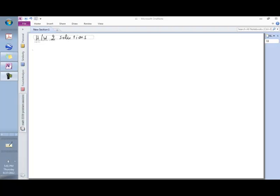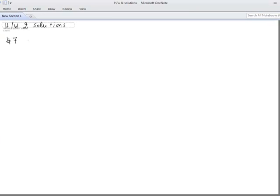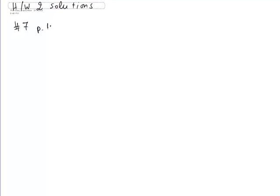In this short problem session, we will work on solutions to homework 2. Homework 2 had problem number 7 on page 103 of the textbook. It had questions B and C, problem number 9 — actually 9 was C, but we can give the solution of B here for practice. Problem 10 is very similar, so I invite you to work on that. And then we had problem 14, questions B and C.